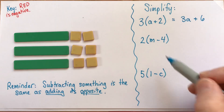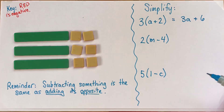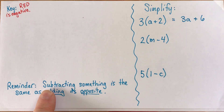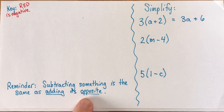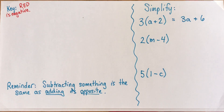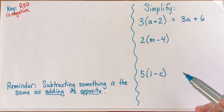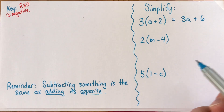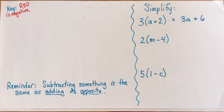The next two examples have subtraction in them. I'd like to remind people that subtracting something is the same as adding its opposite. I'm hoping that once you've got practice using the distributive property with negative signs, you'll be comfortable flipping between a subtraction and adding the opposite. I'm going to do it really explicitly in these examples. If you're comfortable skipping a few steps, that's great; if not, we'll just go step by step.